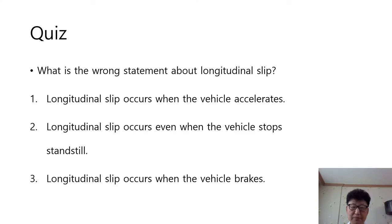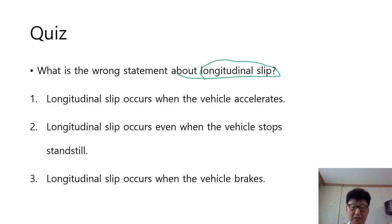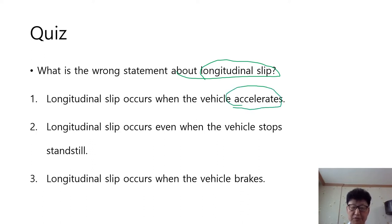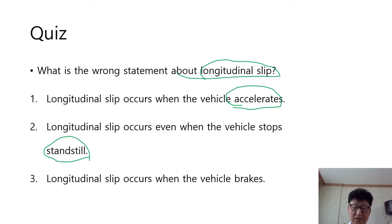As usual, I've prepared a quiz for you. What is the wrong statement about the longitudinal slip? Number 1: longitudinal slip occurs when the vehicle accelerates. Number 2: longitudinal slip occurs when the vehicle stops standstill. Number 3: longitudinal slip occurs when the vehicle brakes.